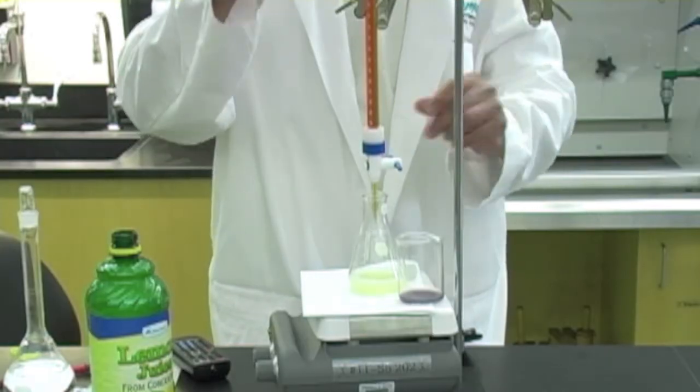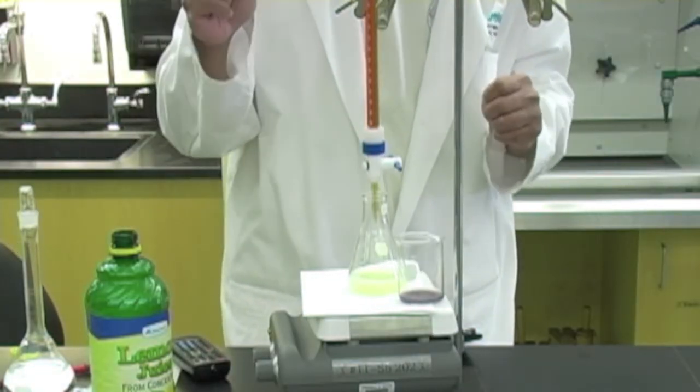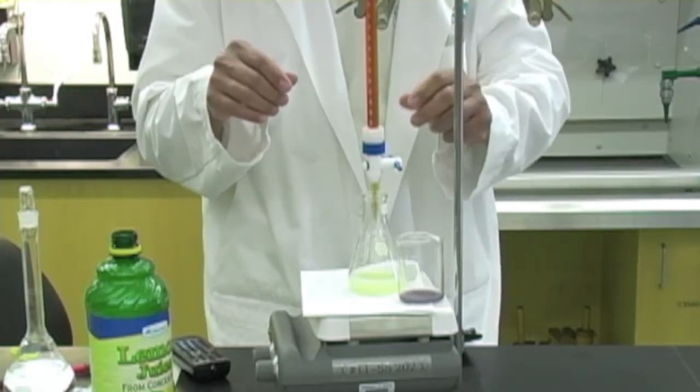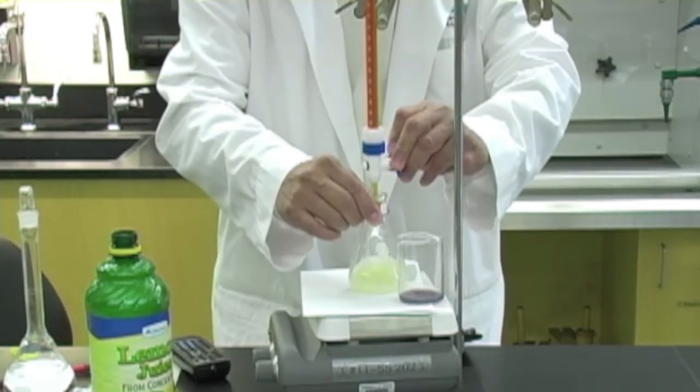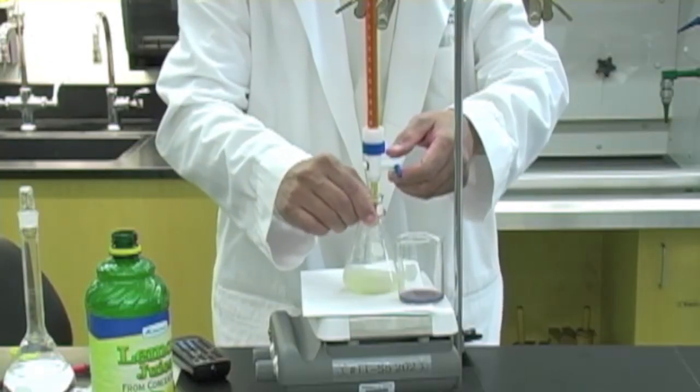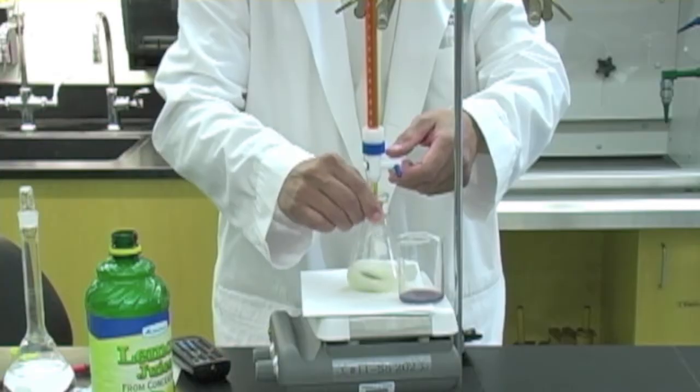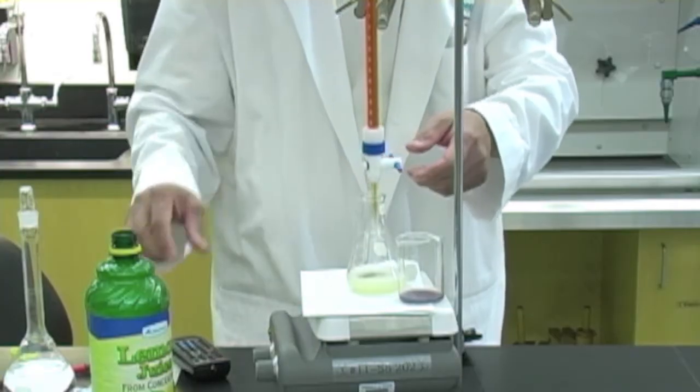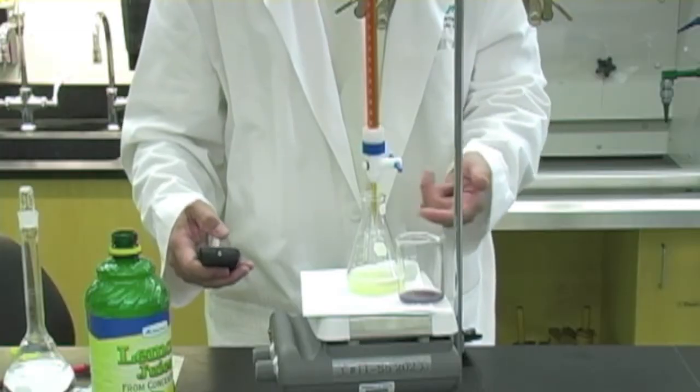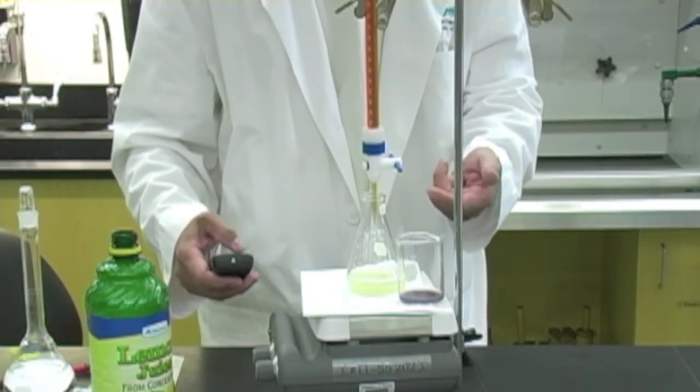So what I'll do is I will read the initial volume of the burette and then I will begin my titration. And initially I want to go ahead and add my iodine. As I approach the endpoint what should happen is that that murky dark color should persist longer.